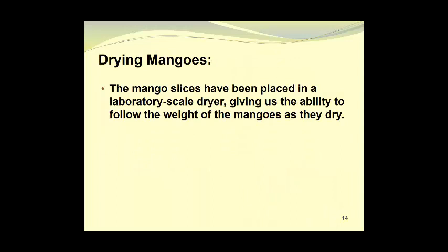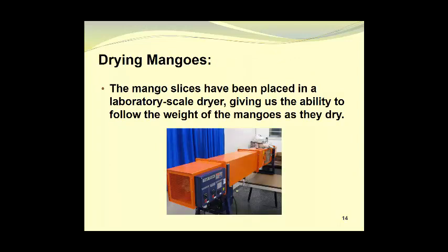The mango slices have been placed in a laboratory scale dryer, giving us the ability to follow the weight of the mangoes as they dry. In this tray dryer, air enters through the grillwork at the bottom left corner of the photograph, and you can just see the orange blades of the fan inside the grillwork. The fan blows the air across some heating coils, and then it travels through the length of the orange dryer up to the point where you see the glass window. Inside the dryer at this point is the rack where the material will be placed for drying, and you can see the balance located on top of the dryer for taking readings of the weights.